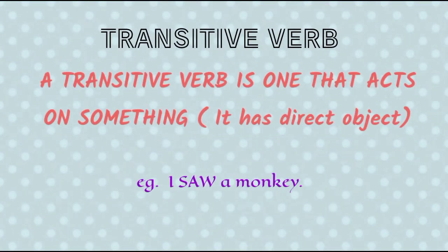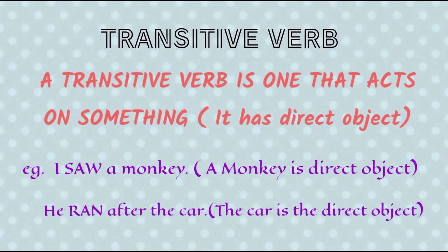Transitive verb. A transitive verb is one that acts on something — that is, it has a direct object. Transitive verb kisi cheez ke oopar siddha act karta hai. Us mein ek direct object hota hai. For example, I saw a monkey — a monkey is a direct object and saw is a transitive verb. He ran after the car — the car is the direct object and ran is the transitive verb.